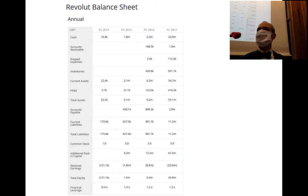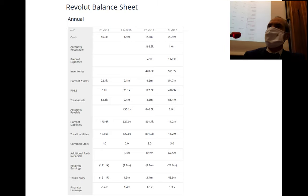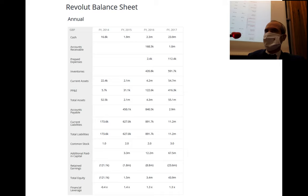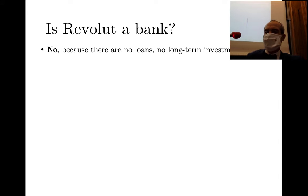People deposit money with Revolut, yet current liabilities are very low because people use Revolut simply as a means of transfer and leave very little money there. When we ask whether Revolut is a bank, the answer is clear: there are no loans, no long-term investments — only current assets. This is not a bank.